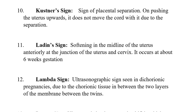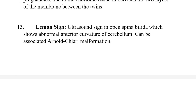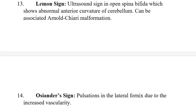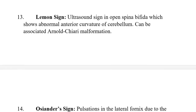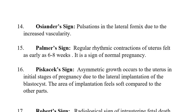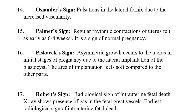Lambda sign is an ultrasonographic sign seen in dichorionic pregnancies, due to chorionic tissue which comes between the two layers of the membrane between the twins. Lemon sign is an ultrasound sign seen in open spina bifida, associated with Arnold-Chiari malformation. Osiander's sign is pulsations in the lateral fornix due to increased vascularity. Palmer's sign is regular rhythmic contractions of the uterus felt at around six to eight weeks — also a sign of normal pregnancy.